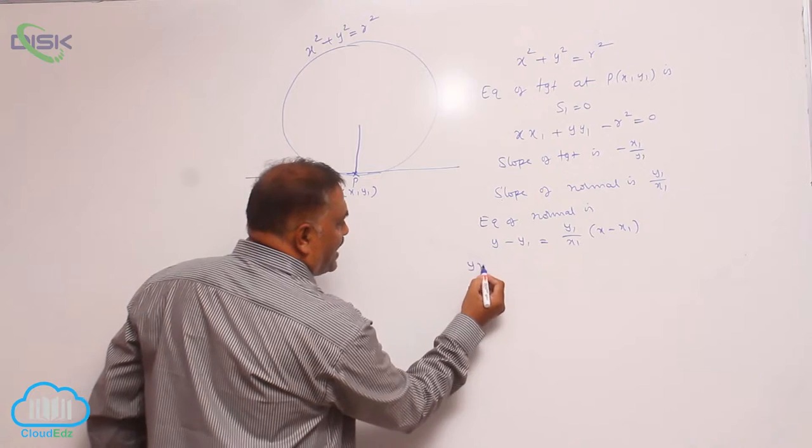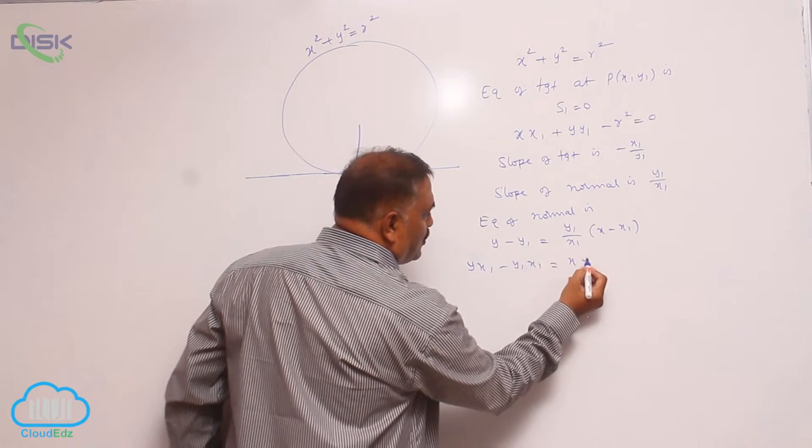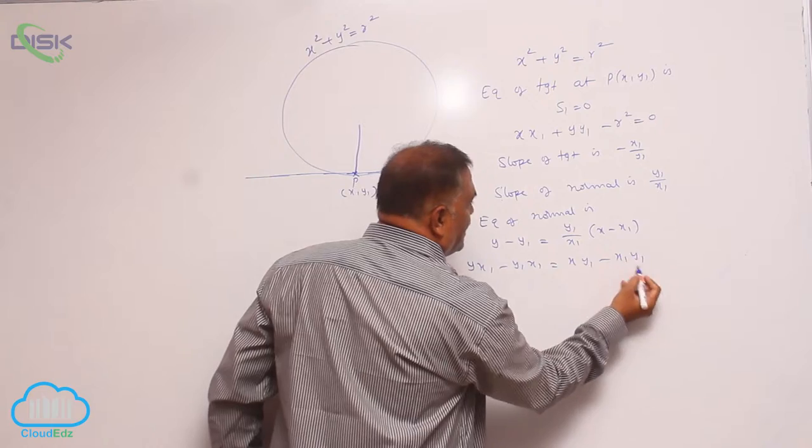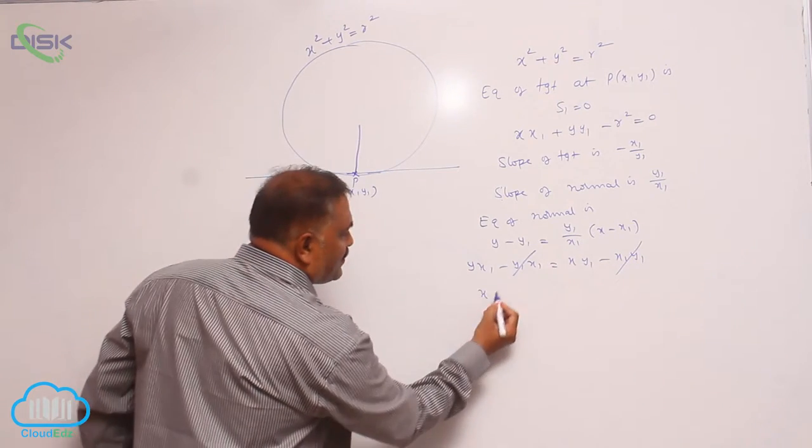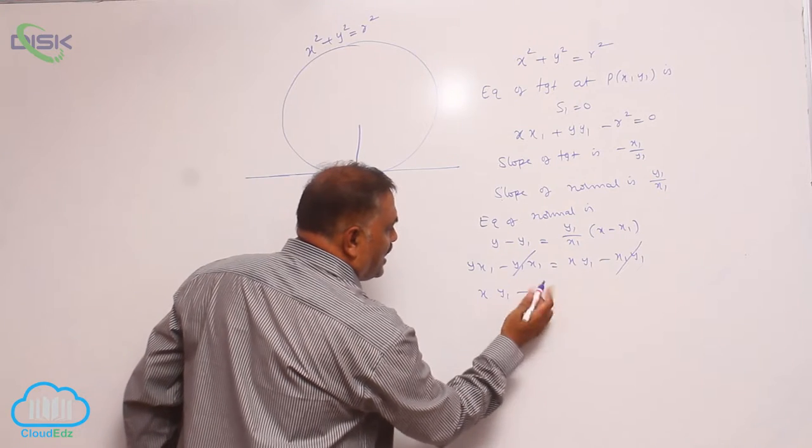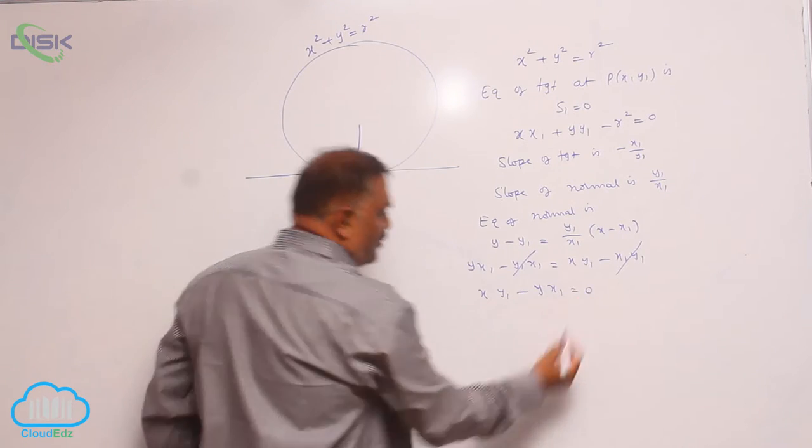So, yx₁ - y₁x₁ = xy₁ - x₁y₁. You know that these two get cancelled. xy₁ - yx₁ = 0.